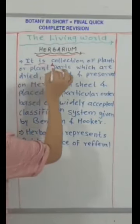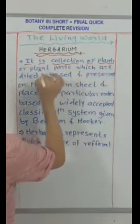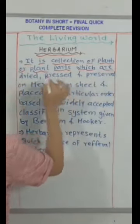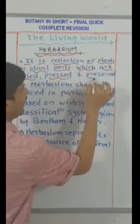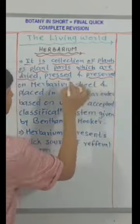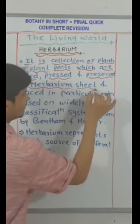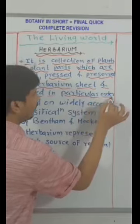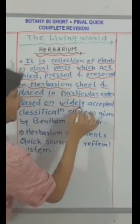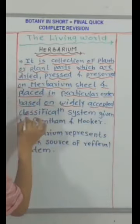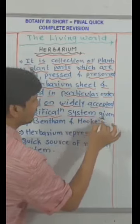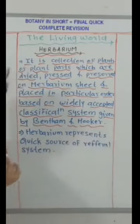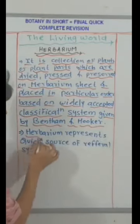Herbarium: it is a collection of plants or plant parts which are dried, pressed, and preserved on herbarium sheets and placed in a particular order based on the widely accepted classification system given by Bentham and Hooker.